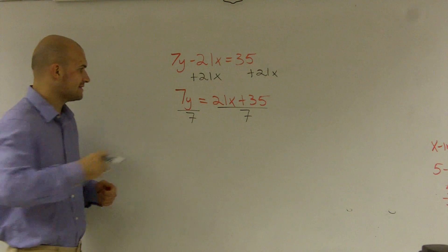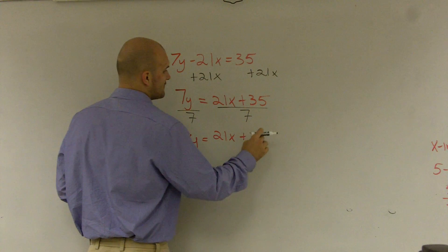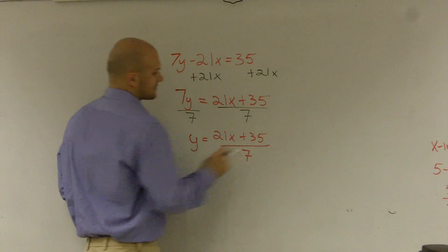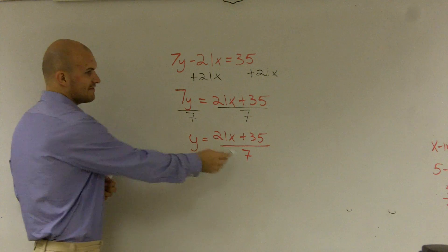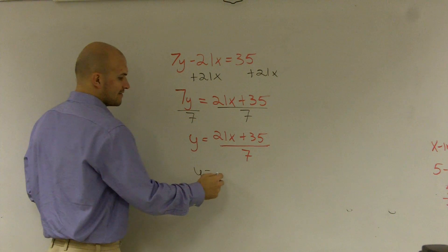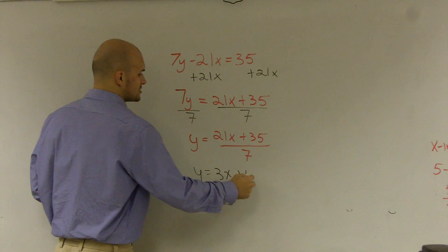Then you'll get y equals 21x plus 35 divided by 7. What I can do is divide both of these terms by 7. So 21x divided by 7 is 3x, and 35 divided by 7 is 5.